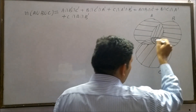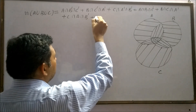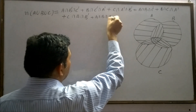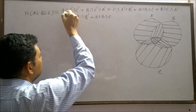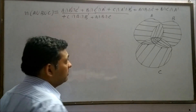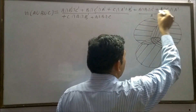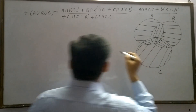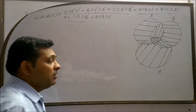And this region is also there: A intersection B intersection C. These are exactly A, B, and C. And these regions are: A and B but not C, B and C but not A, A and C but not B, and A intersection B intersection C.